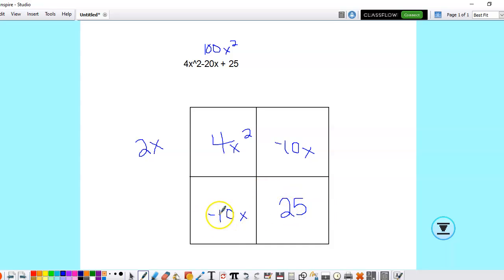And the greatest common factor here, you have to take that negative out with this. Otherwise, your signs won't be right. So that would be negative 5.